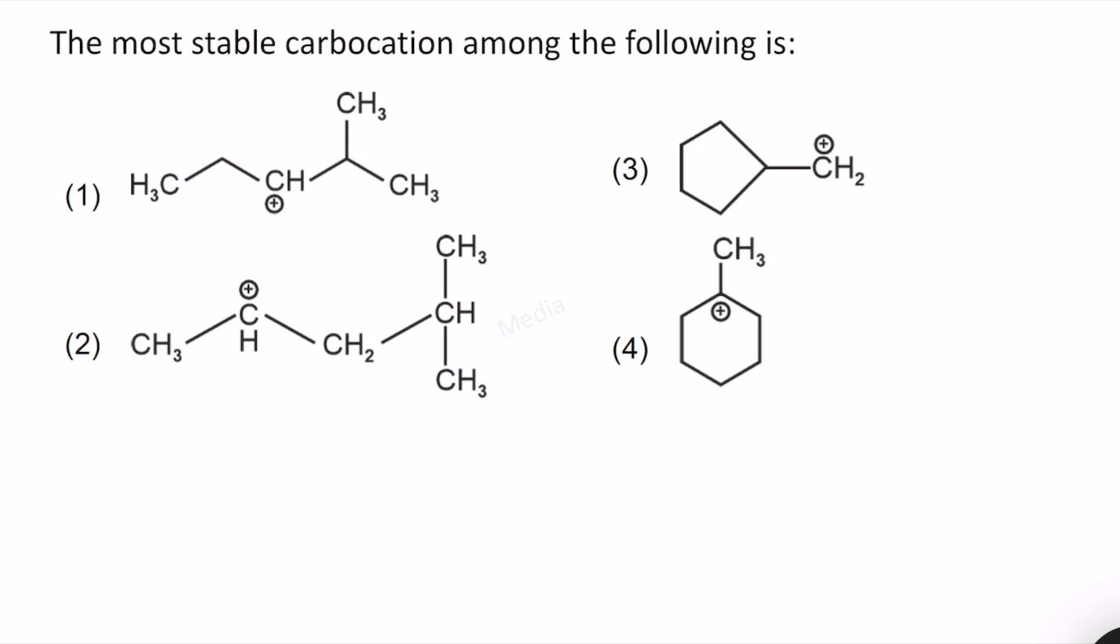In structure 1 here we have 2 alpha hydrogen atoms and here we have 1 alpha hydrogen atom. So in total we have 3 alpha hydrogen atoms and this is a secondary carbocation because CH plus is connected to 2 other carbon atoms.